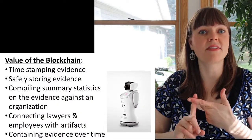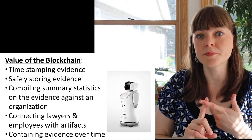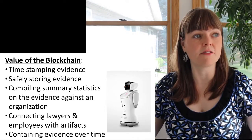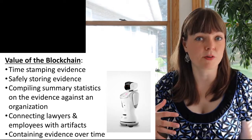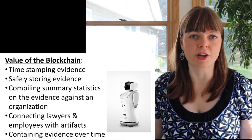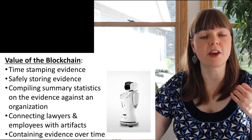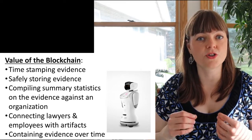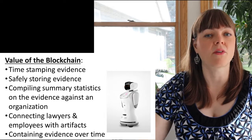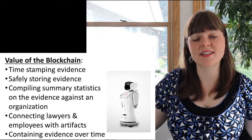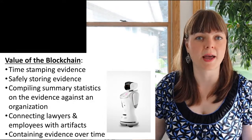So to summarize: the blockchain timestamps evidence, stores it safely and immutably, compiles summary statistics of all evidence submitted from many different employees perhaps over many different years, connects lawyers with artifacts according to the employee's comfort level, and basically contains this growing body of evidence over time. This system isn't perfect — I may eventually talk about the weaknesses of this system and how those might be dealt with. But this is a basic vision of what an anti-corruption blockchain might look like.